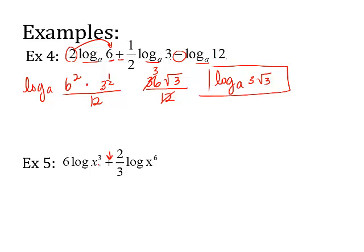Look at number 5. Plus means product rule. Well, you've got powers and more powers. So let's see what happens here. The log of x cubed raised to the 6th power times, that's what the plus sign gives us, x to the 6th raised to the 2 thirds power. So don't freak out about these powers to powers. Because if you remember your exponent rules, a power is raised to a power, you multiply the powers.